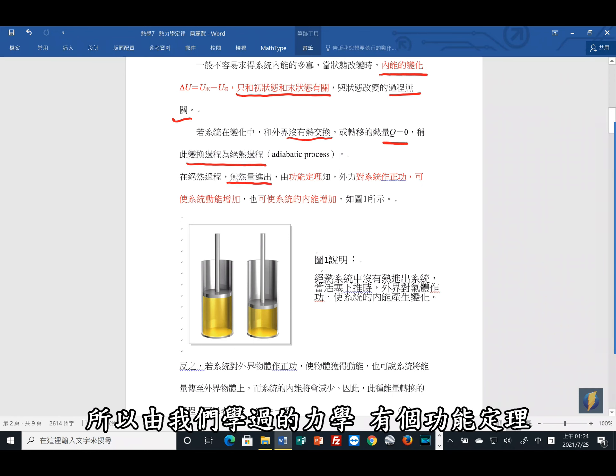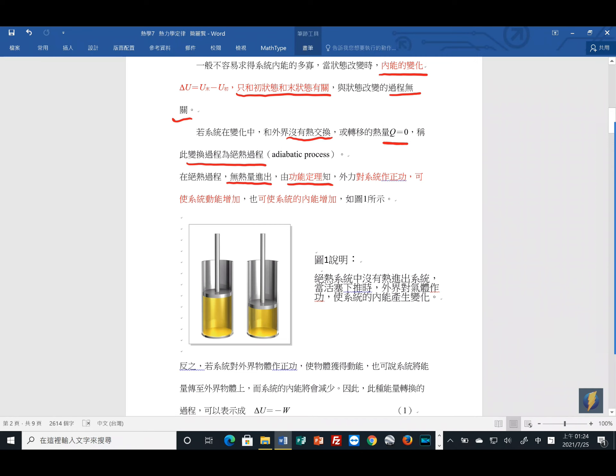在绝热的过程中,没有热量的进出。我们学过的力学有一个功能定理,外力对系统如果做正功,则系统的动能会增加。同理,如果外力对系统做负功,那系统的动能会减少。那现在,如果是系统,外力对系统做正功,那么系统动能会增加。动能是内能一部分。